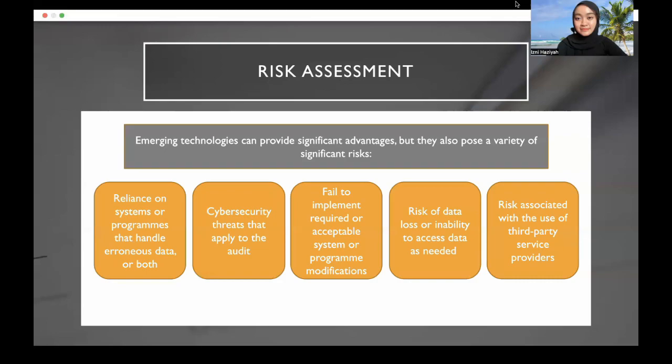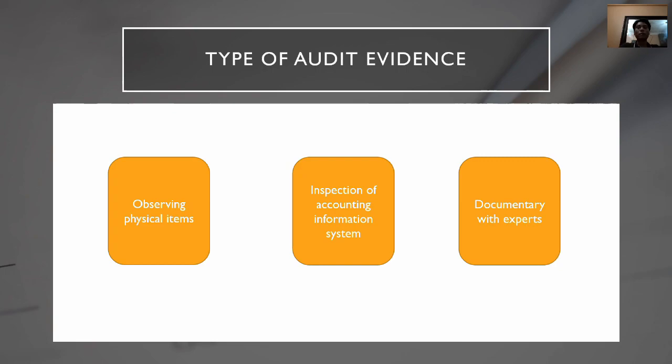I will be presenting the types of audit evidence. When planning their audit work, the auditor should take into account the type of audit evidence to be gathered. It is used to meet audit objectives, with varying levels of reliability. The types of audit evidence which the auditor should consider are: observing tangible items, inspection of accounting information software, and documentary evidence with experts.